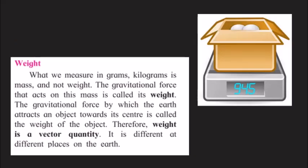The second physical quantity is weight. The gravitational force that acts on the mass is called weight. We have gravitational pull on Earth, and that is why we can walk properly. Weight is a vector quantity, and it changes from place to place. If you go to the top of a mountain, your weight will be different than on the ground, because the gravitational pull decreases as you move above the ground.